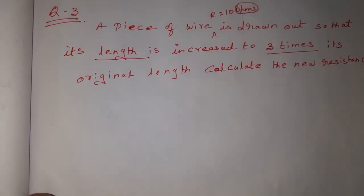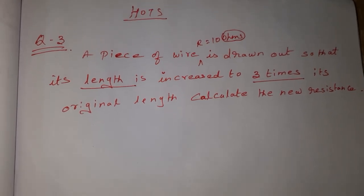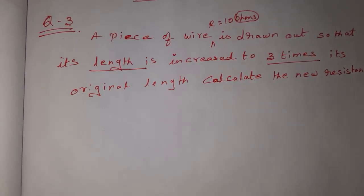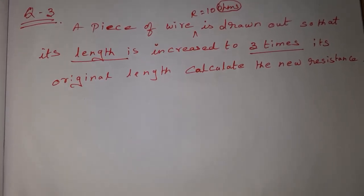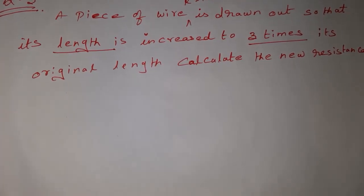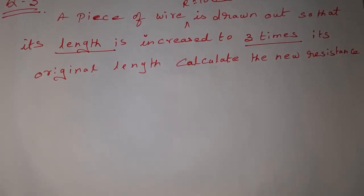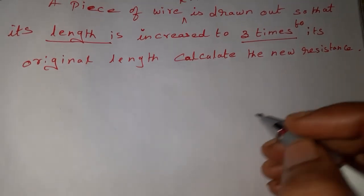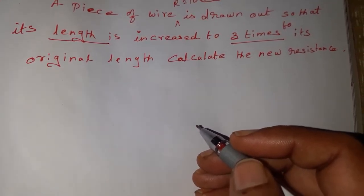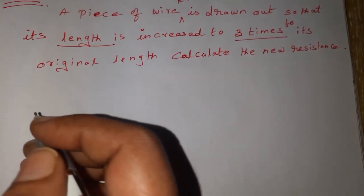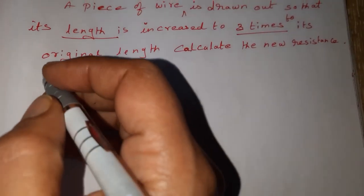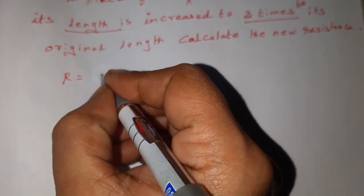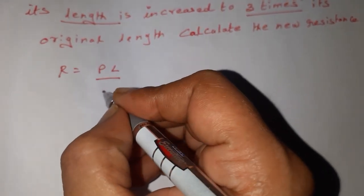We are going to see the electricity lesson HOTS question number 3. A piece of wire whose resistance is 10 ohms is drawn out so that its length is increased three times its original length. Calculate the new resistance. We know the formula: resistance R is equal to rho times L divided by A.